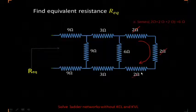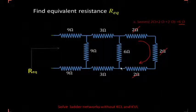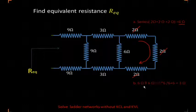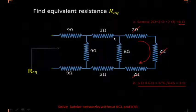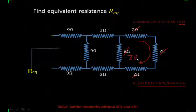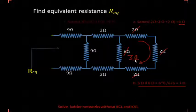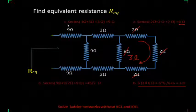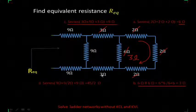Now if we replace these resistances with 6 ohm, this 6 ohm will be connected in parallel to this 6 ohm. So 6 ohm and 6 ohm in parallel becomes 3 ohms. Now this 3 ohm, this 3 ohm, and this 3 ohm are now in series, and the series combination becomes 9 ohms.